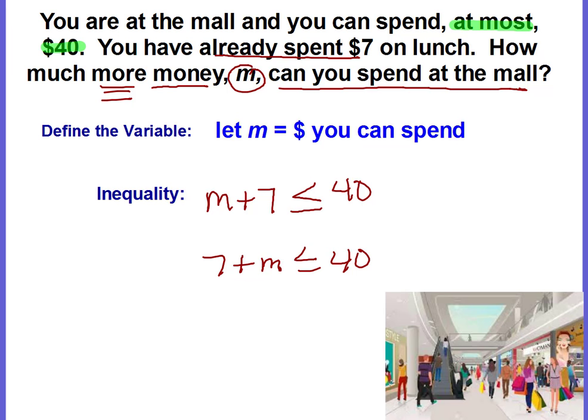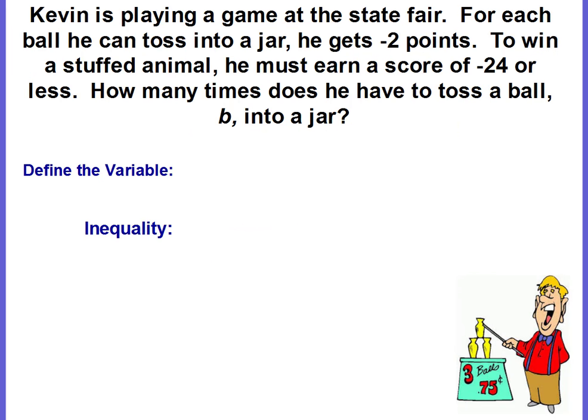Let's try another example. Kevin is playing a game at the state fair. For each ball he can toss into a jar, he gets negative two points. To win a stuffed animal, he must earn a score of negative twenty four or less. How many times does he have to toss a ball, B, into a jar?